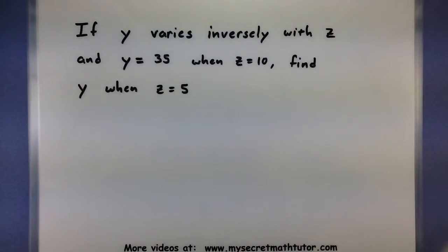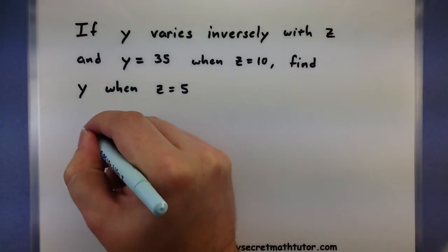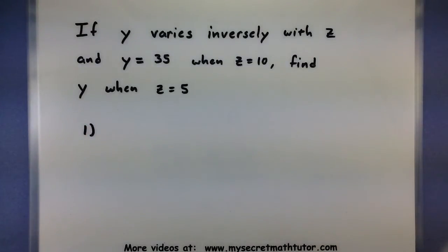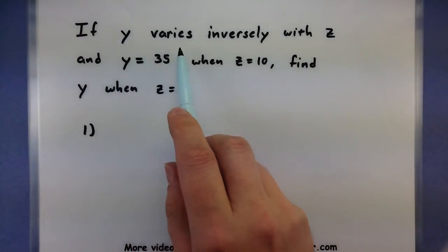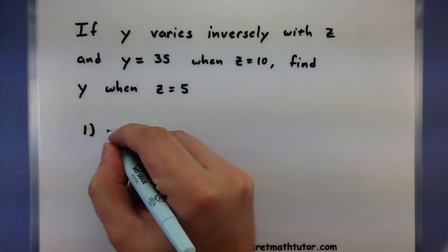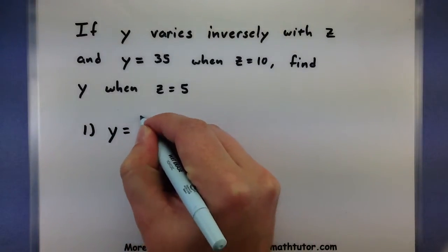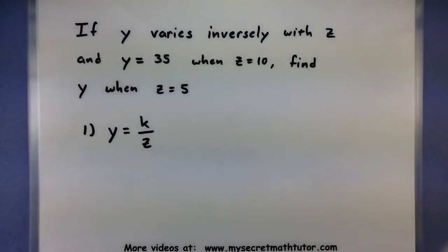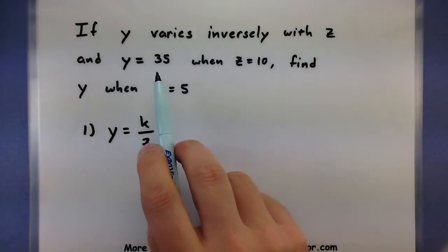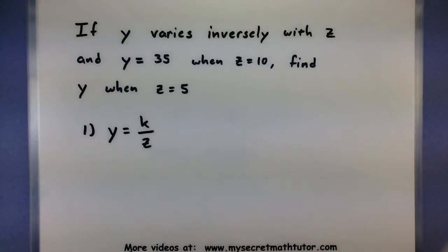Let's give it a try with this one. So if y varies inversely with z and y equals 35 when z equals 10, find y when z equals 5. The very first step we want to do is just recognize what type of variation problem is this. This one tells us y varies inversely with z. So there's my basic formula.